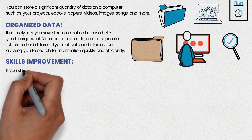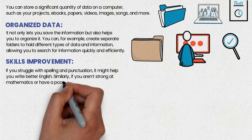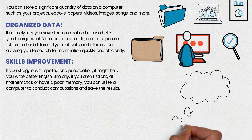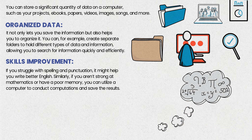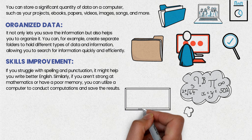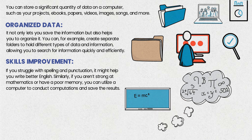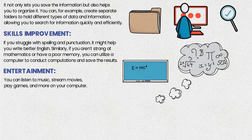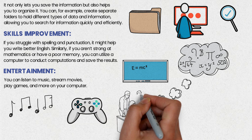Skills Improvement — if you struggle with spelling and punctuation, a computer can help you write better English. Similarly, if you are not strong at mathematics or have a poor memory, you can utilize a computer to conduct computations and save the results. Entertainment — you can listen to music, stream movies, play games, and more on a computer. The computer has become an integral part of our daily life, and there are several tasks we perform daily that need the use of a computer.